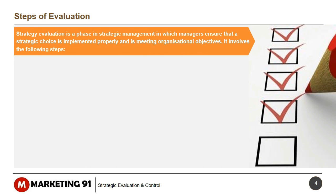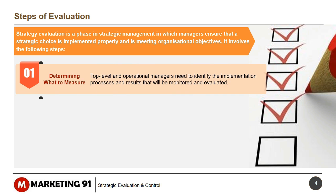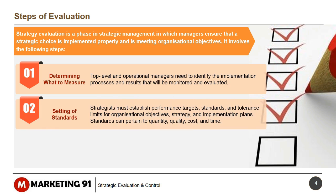Steps of evaluation. Strategy evaluation is a phase in strategic management in which managers ensure that a strategic choice is implemented properly and is meeting organizational objectives. It involves the following steps. First, determining what to measure: top-level and operational managers need to identify the implementation processes and results that will be monitored and evaluated. Second, setting of standards: strategists must establish performance targets, standards and tolerance limits for organizational objectives, strategy and implementation plans.